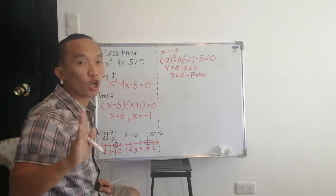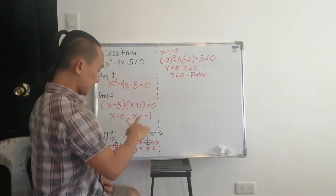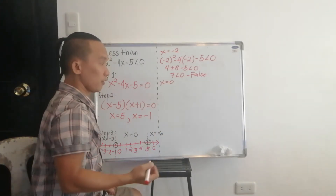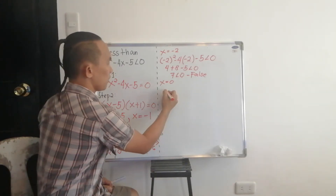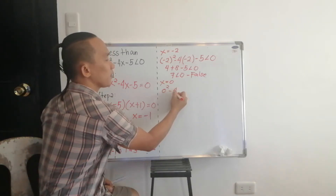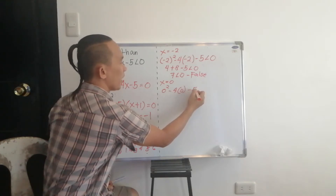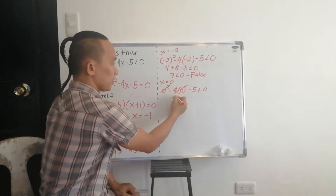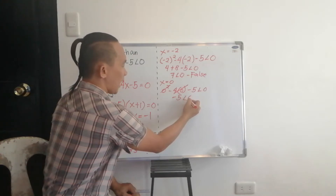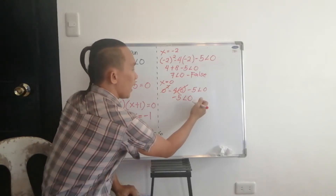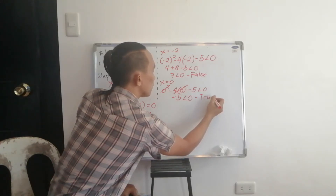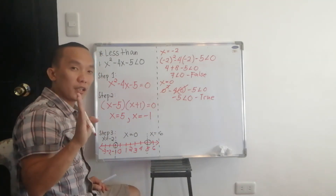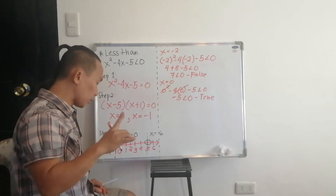Next, let x equal zero: zero squared minus four times zero minus five less than zero. Solving, the first two terms become zero, leaving negative five less than zero. Is negative five less than zero? Yes. Therefore this is a true statement, meaning all values between negative one and positive five are part of the solution.